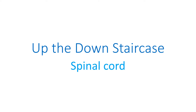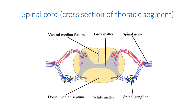Spinal cord. The spinal cord is located in the vertebral canal and consists of two symmetrical halves separated by the ventral median fissure and dorsal median septum. Rostrally, the spinal cord continues into the medulla oblongata.